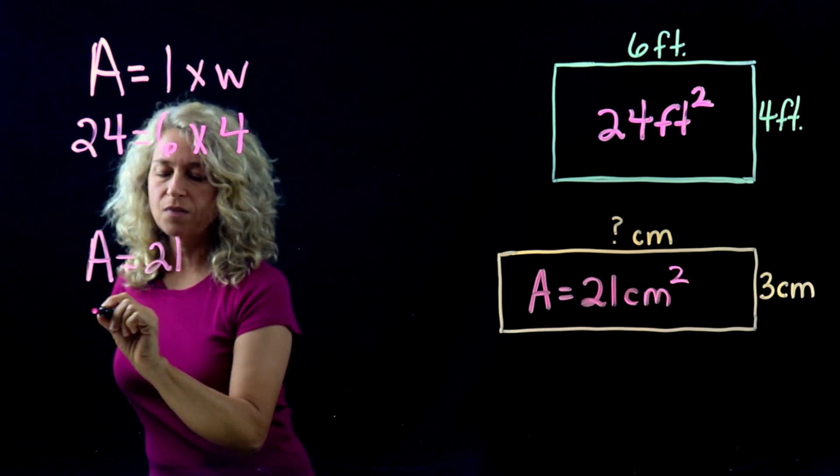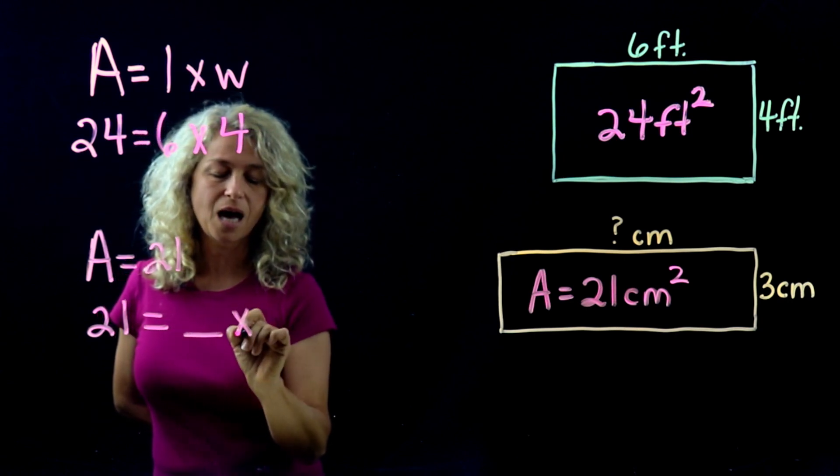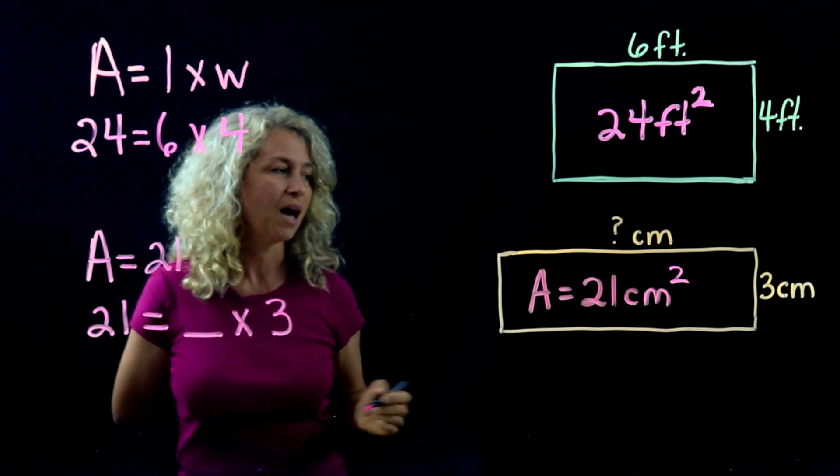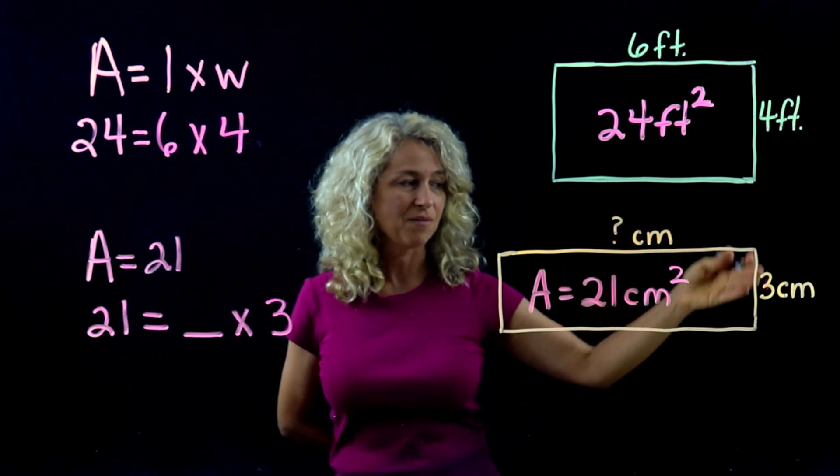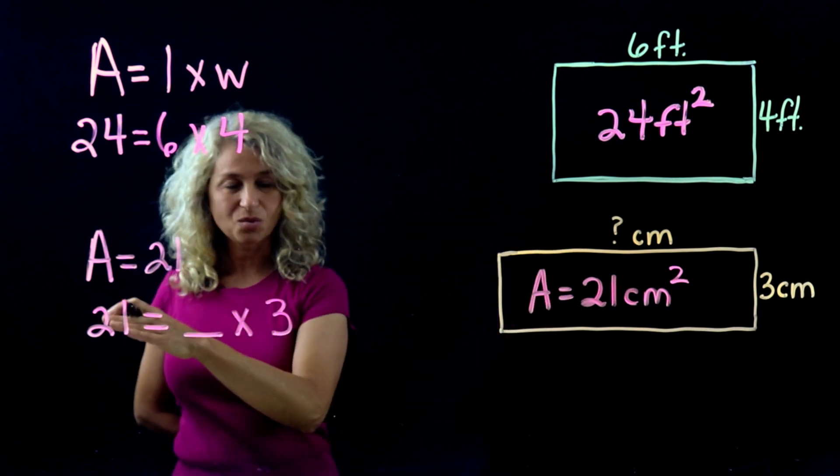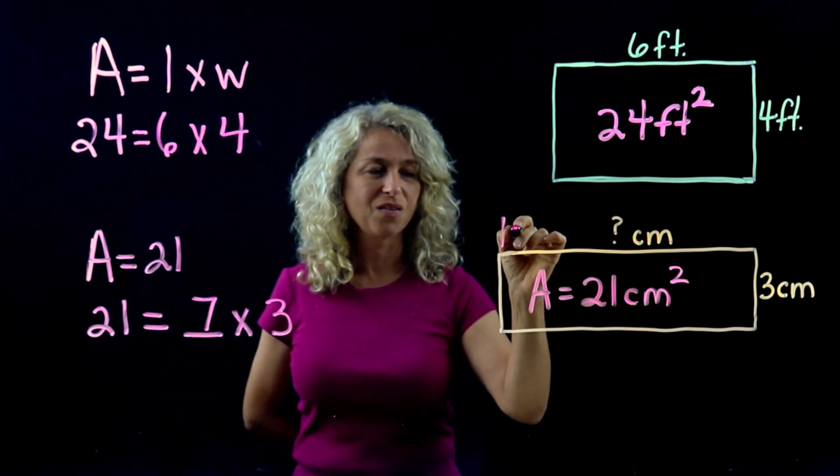So we're missing length, aren't we? We have a width, we need the length. So what times 3 equals 21? 7. All right, so now we know that the length is 7 centimeters.